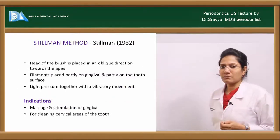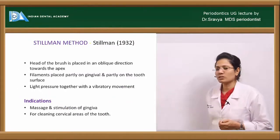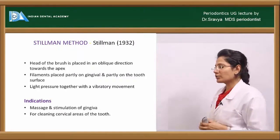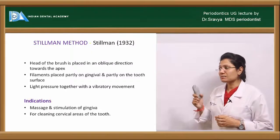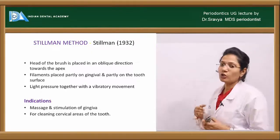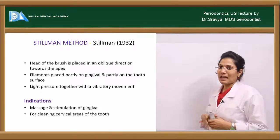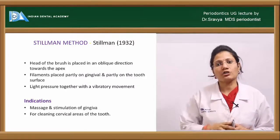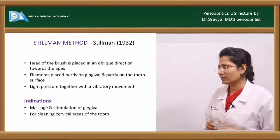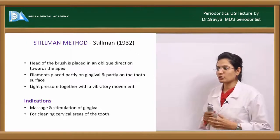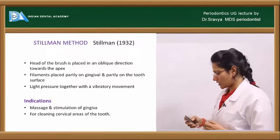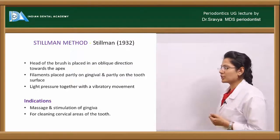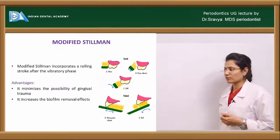Stillman's method was put forward by Stillman in 1932. The head of the brush is placed in an oblique direction towards the apex of the tooth, with half the bristles on the tooth surface and half on the gingival margin. Light pressure is applied together with a vibratory motion. The indication is when you need to massage and stimulate the gingiva while cleaning the cervical areas of the tooth.